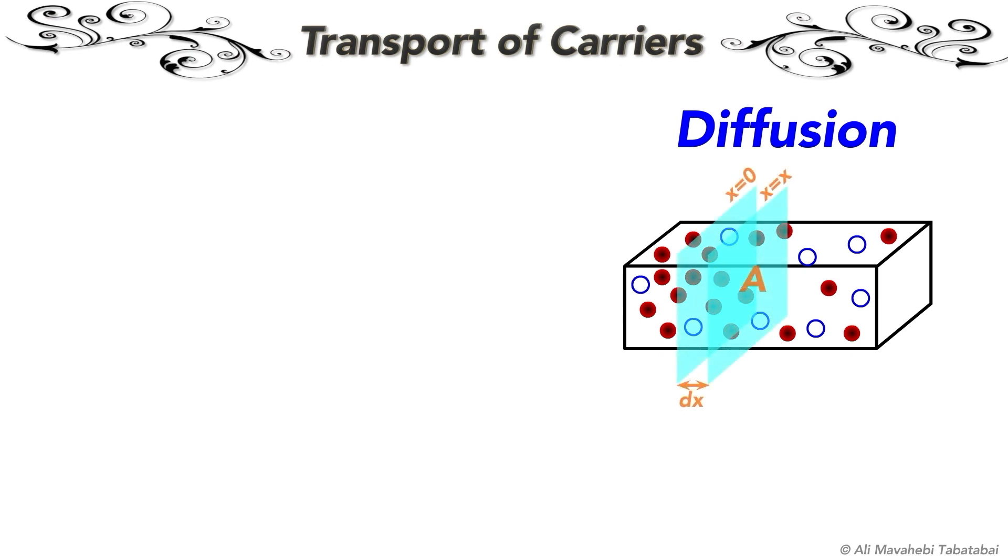Imagine two cross-sectional areas of a semiconductor at distances 0 and x. If the number of either electrons or holes is greater in one area compared to another, carriers tend to move from the region of higher concentration to the region of lower concentration, even in the absence of an applied voltage or external electric field.